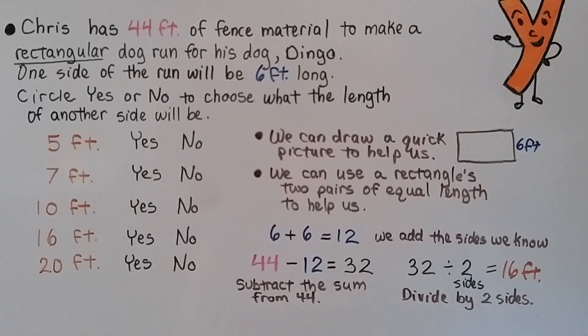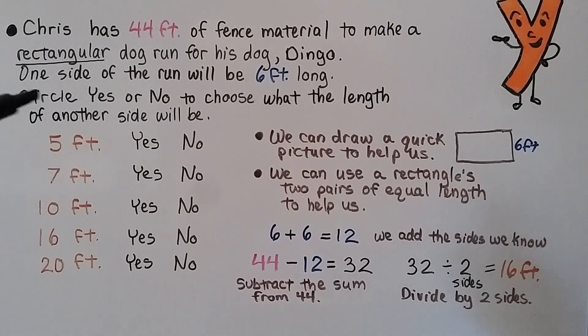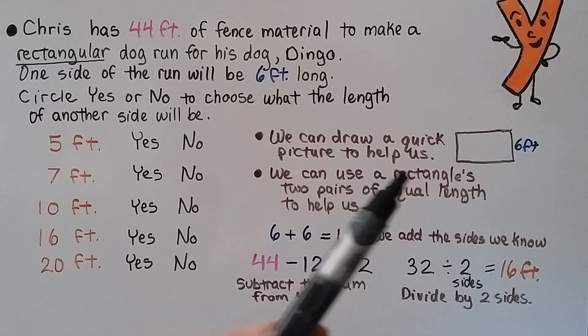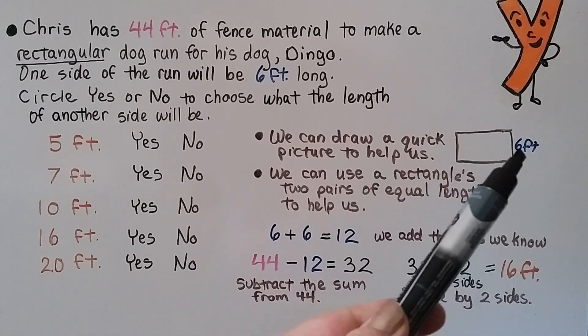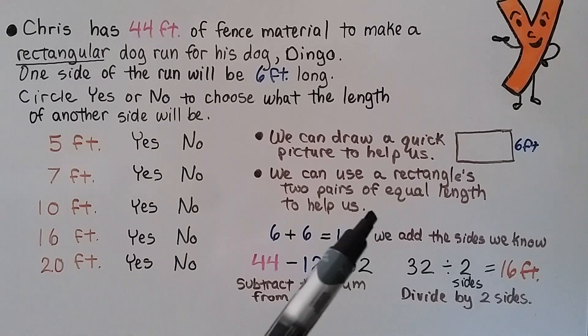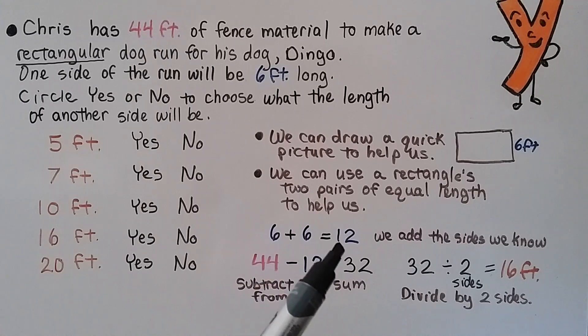Chris has 44 feet of fence material to make a rectangular dog run for his dog Dingo. One side of the run will be 6 feet long. Circle yes or no to choose what the length of another side will be. So we have 5 feet, 7 feet, 10, 16, 20. We have to circle yes or no if those will fit. So we can draw a quick picture to help us. We know it's a rectangle and one side is 6 feet. And we can use a rectangle's two pairs of equal length to help us. If one side is 6 feet, the other side of the pair would be 6. And 6 plus 6 equals 12. We add the sides we know.